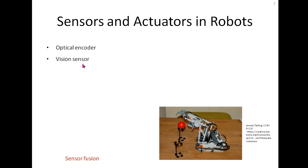Vision sensors come in many types: a single camera, stereo camera, or depth camera. They give a lot of information about the environment. A mono camera gives information about colors and objects. A stereo camera additionally tells the depth of an object from the camera, and a depth camera can do the same.